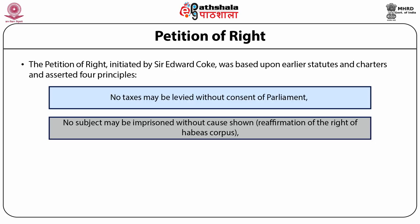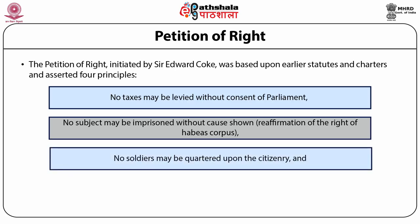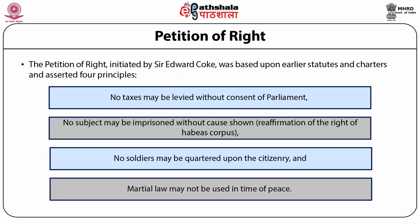The third principle of the Petition of Right was that no soldiers may be quartered upon the citizenry — one of the primary reasons the petition was drafted in the first place. The citizenry was already struggling to feed their own children, and imposing soldiers upon them was a gross violation of their right to life and livelihood. Finally, the petition stated that martial law may not be used in a time of peace.